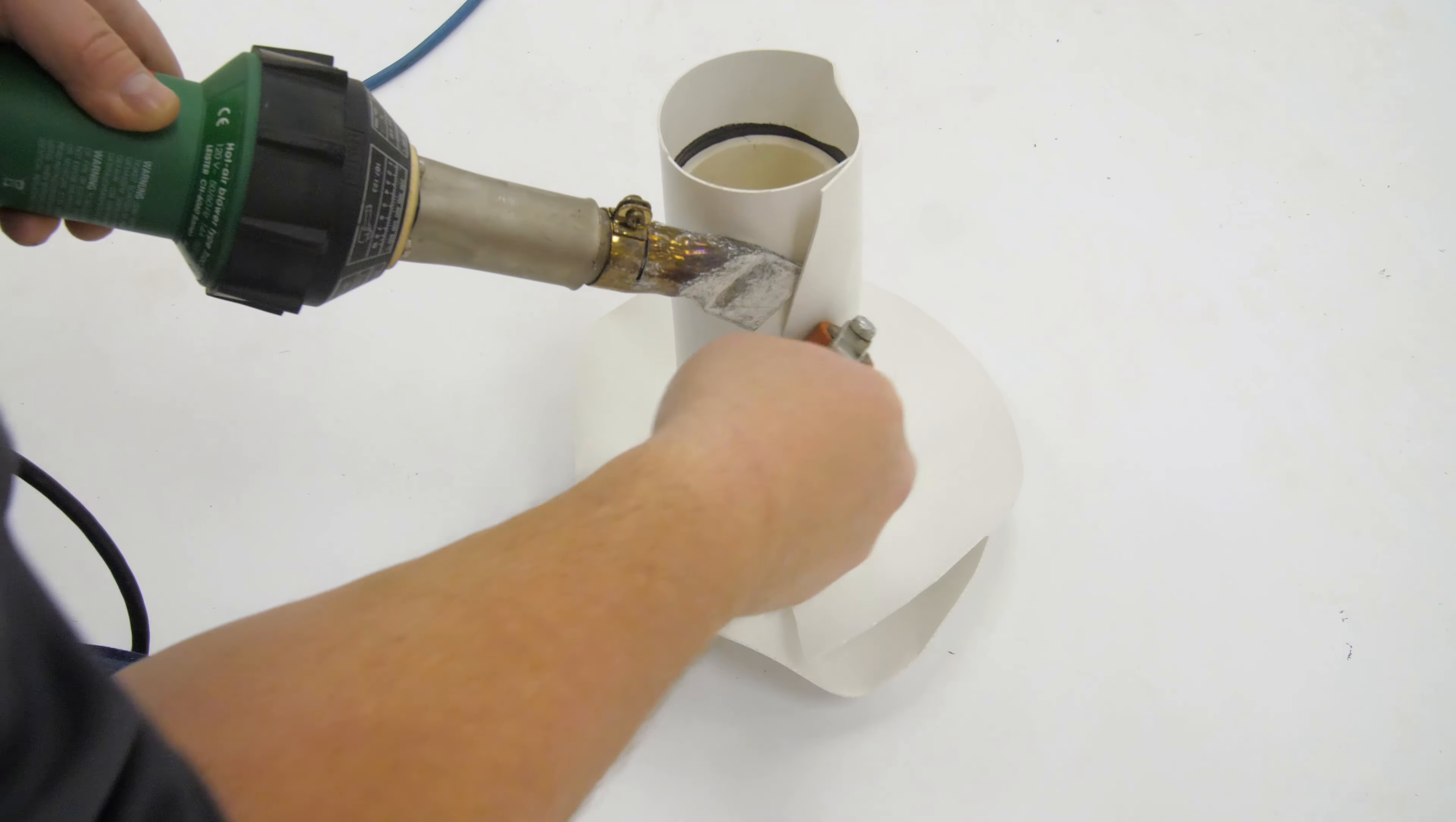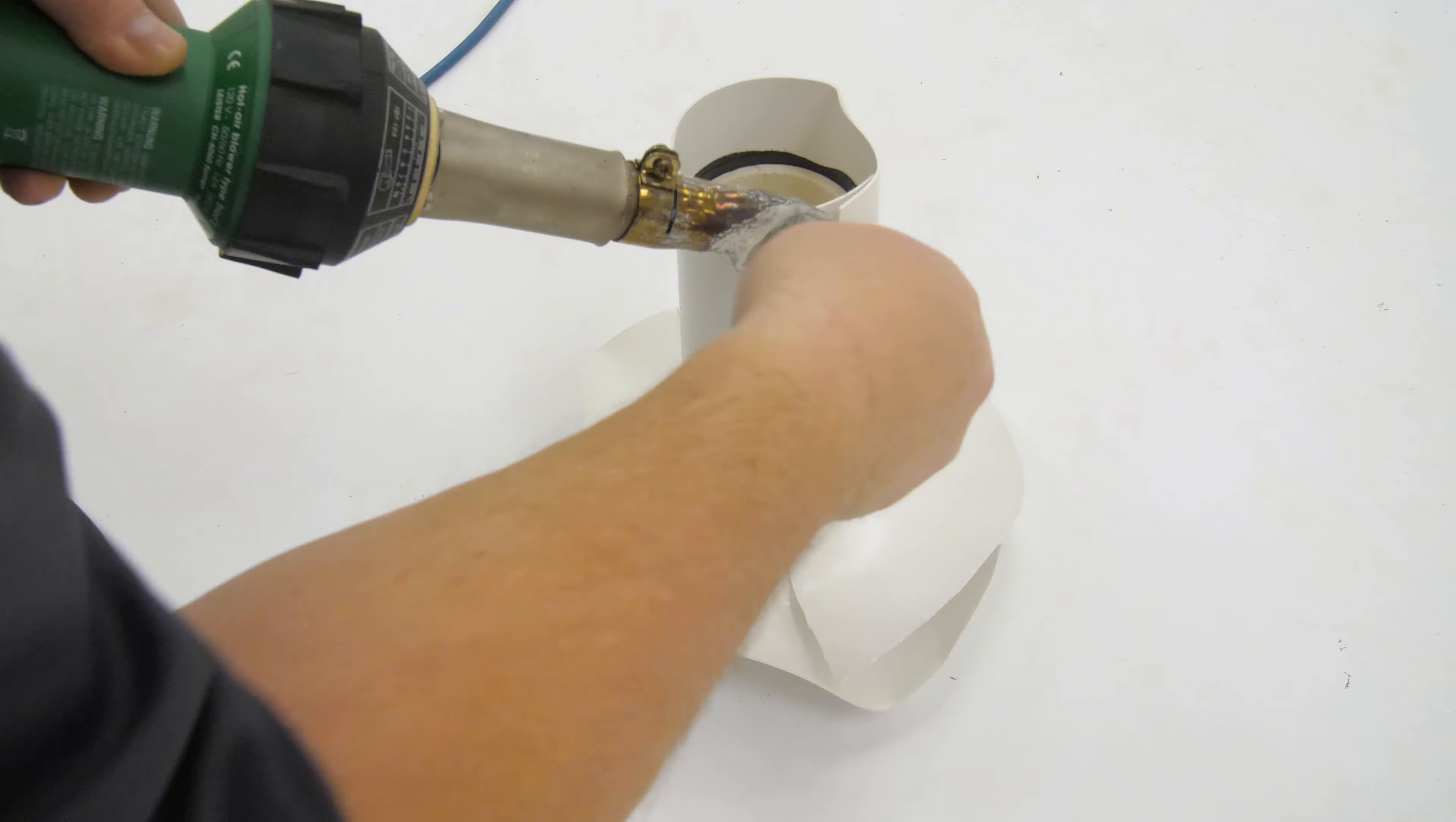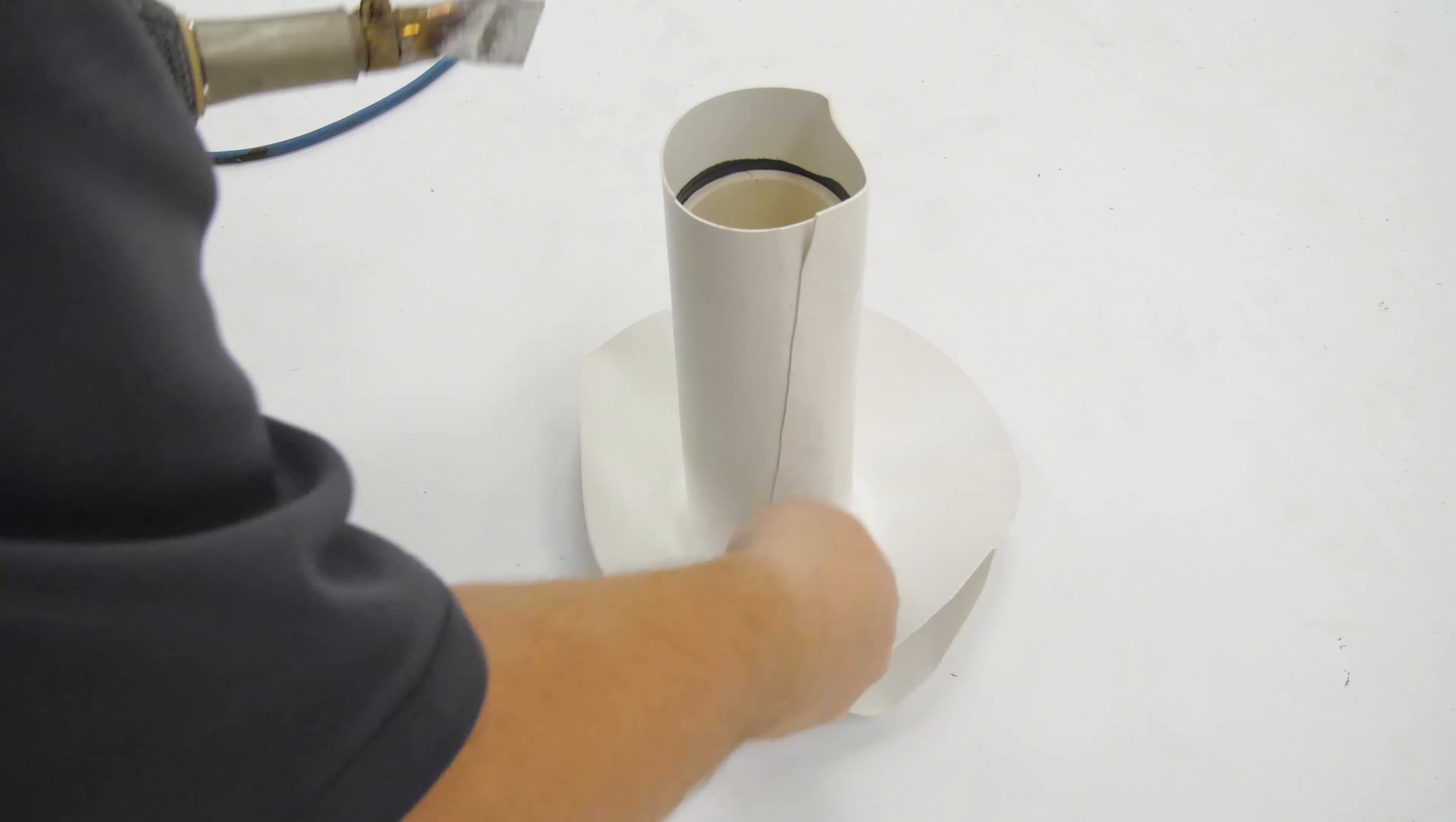Starting from the bottom and working up, weld the entire width of the vertical seam. Be sure to use adequate pressure to ensure a proper weld.